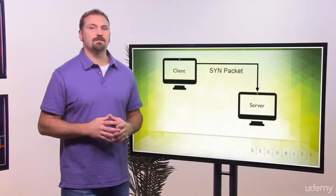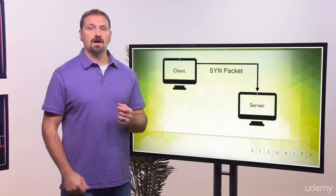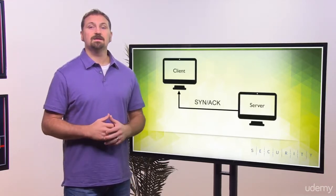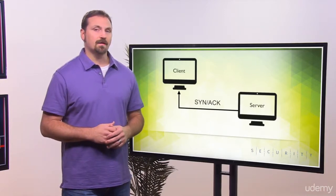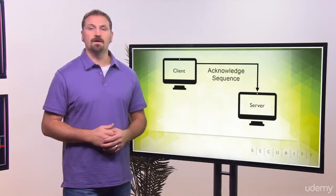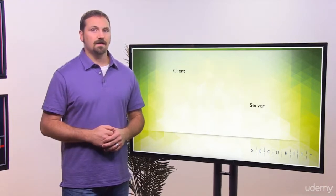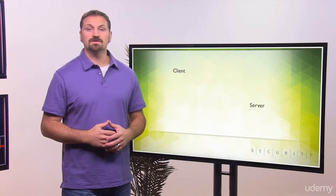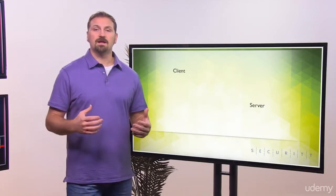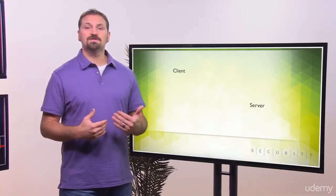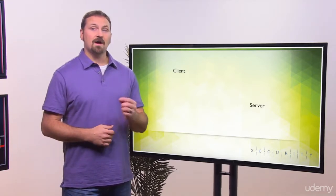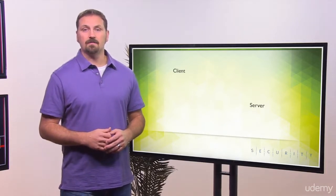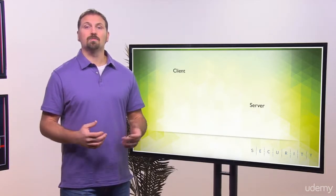The client will first send a SYN packet to synchronize the client's sequence number. The server will respond with a SYNACK, synchronizing its sequence number with the client and acknowledging the sequence number of the client. Finally, the client will respond with an acknowledgement of the server's sequence number. Now both sides of the conversation have the other's sequence number, and therefore a TCP conversation can commence and lost packets will be spotted.